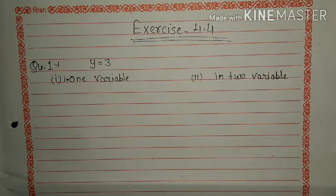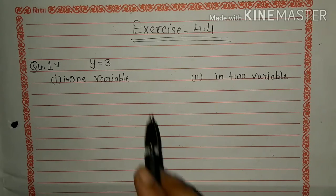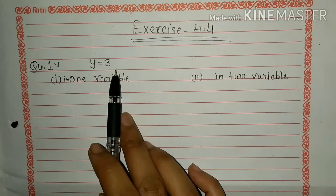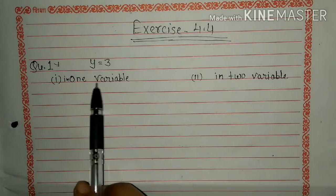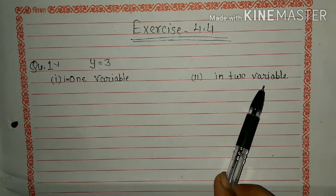So here you see our equation is y=3. Now we present this equation by two ways: in one variable, in two variables.